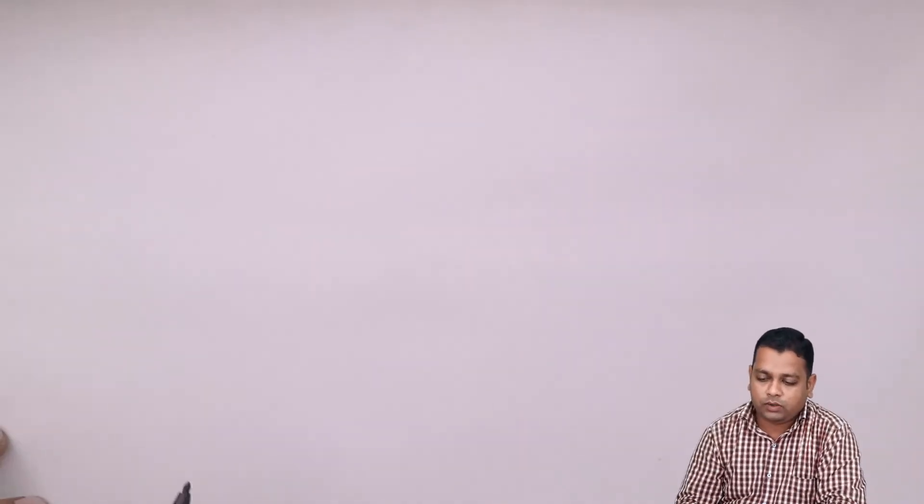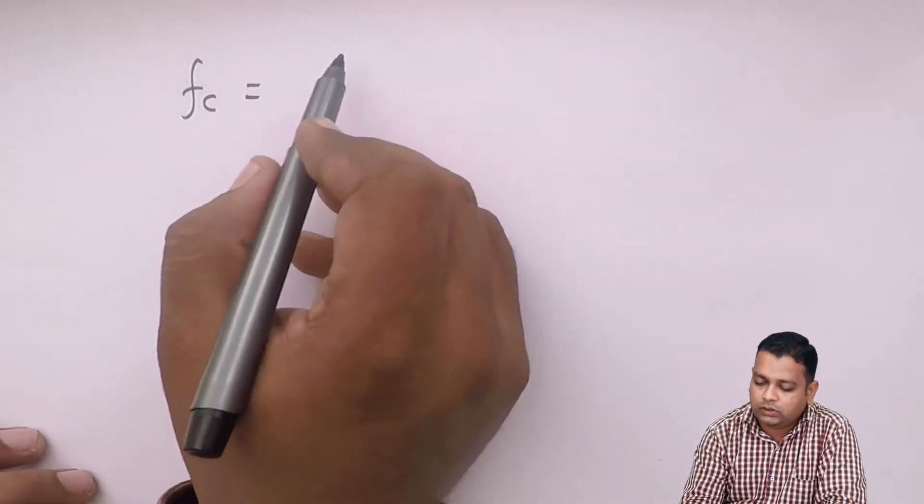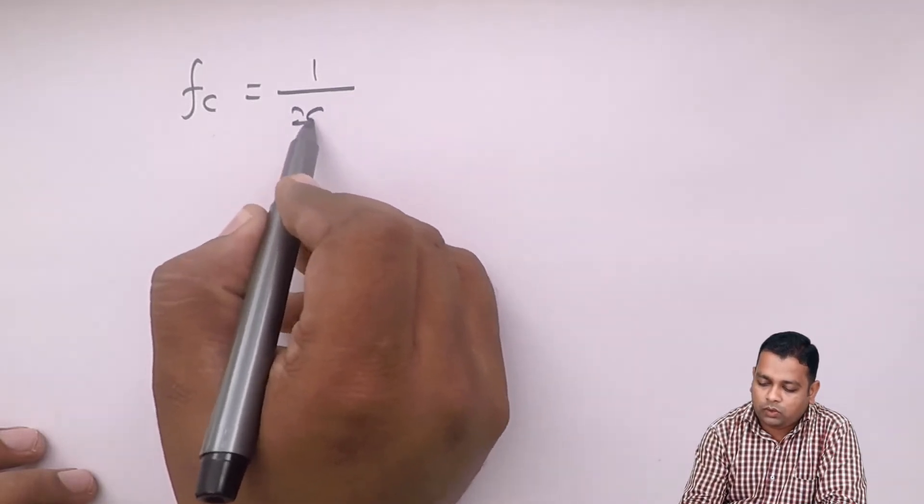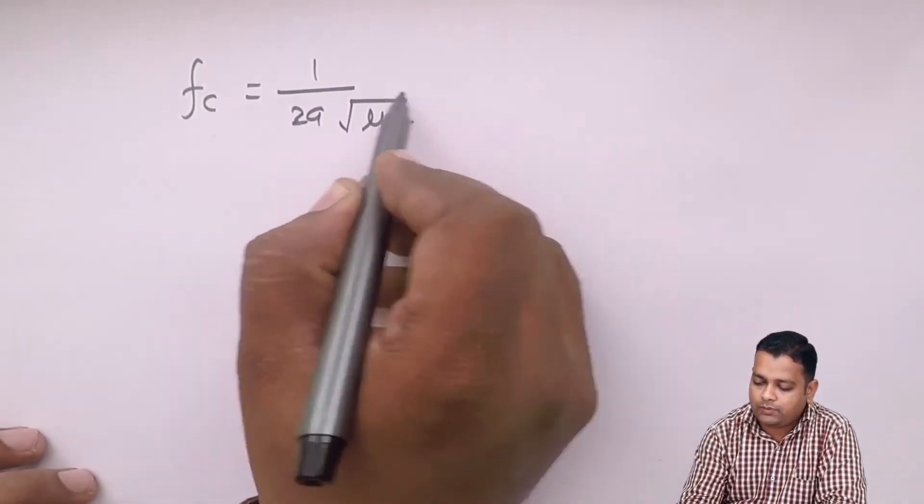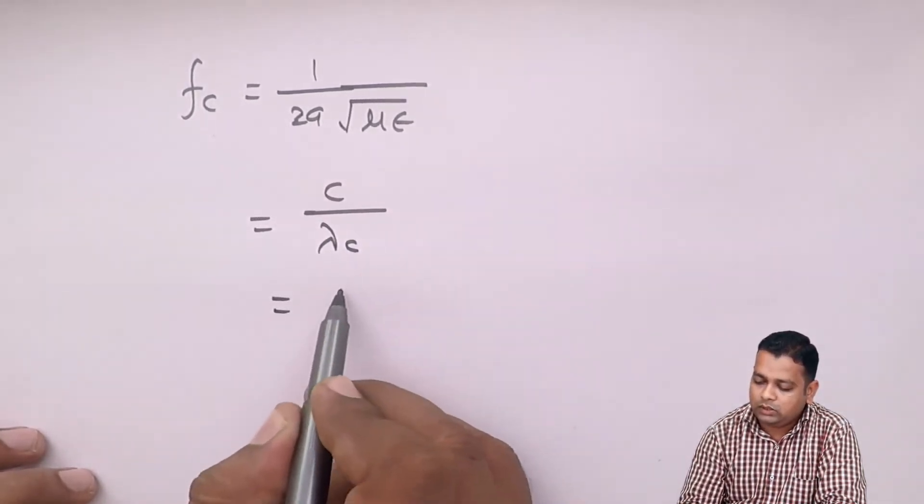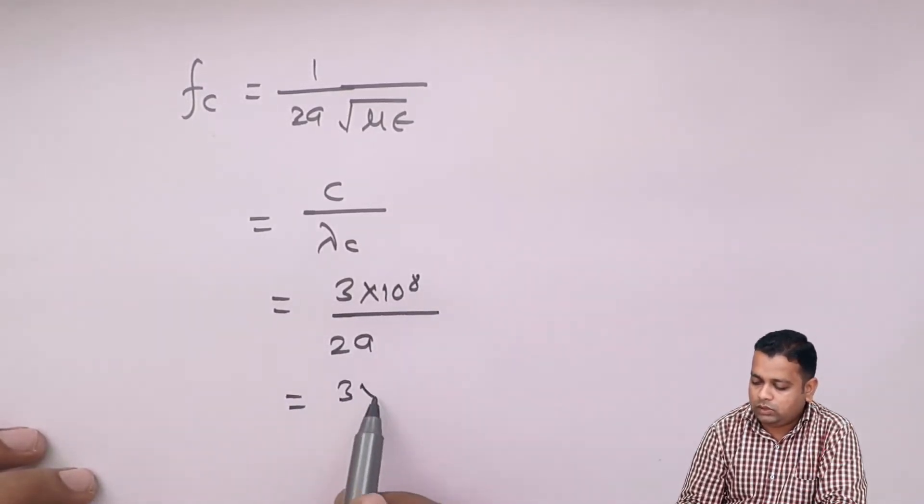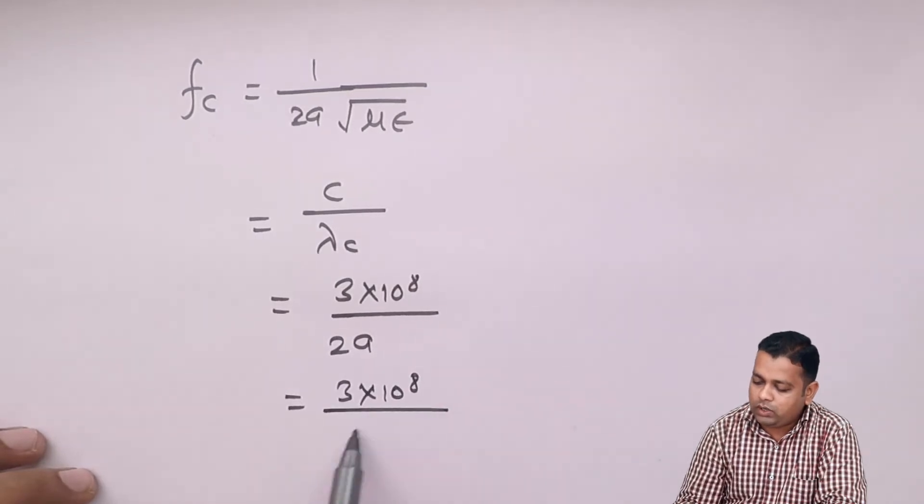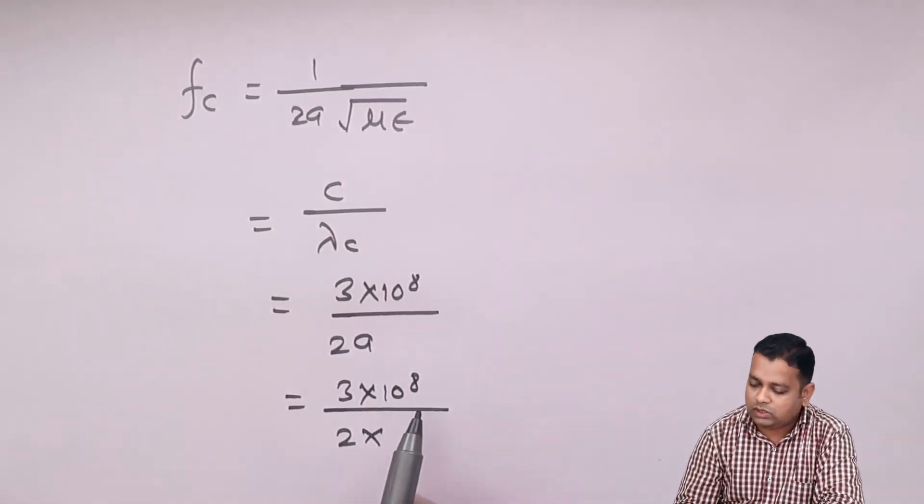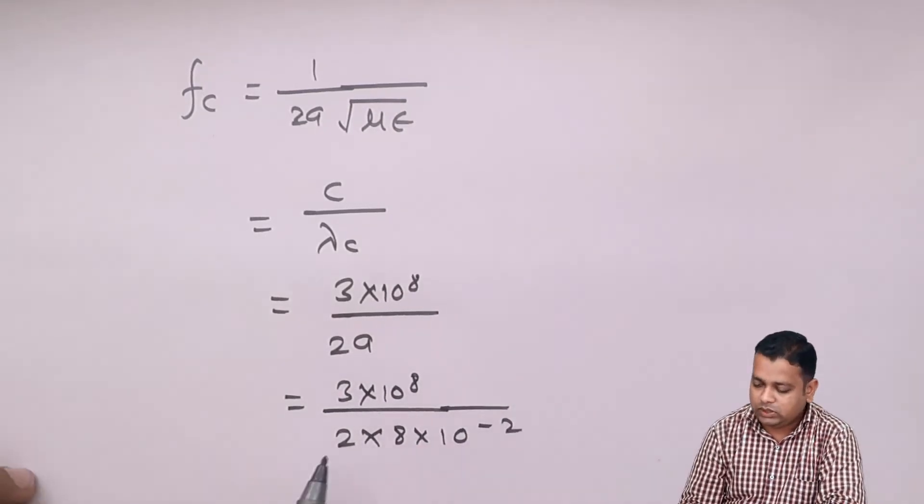For TE10 the dominant mode, the substitution of Fc has to be calculated. Fc is 1 upon twice a under root of mu into epsilon, or we can say Fc equals C upon lambda C, that is 3 into 10 to power 8 divided by twice a. So 3 into 10 to power 8 divided by 2 into 8 into 10 to power minus 2. This results in the cutoff frequency Fc equals 3 into 10 to power 8 divided by 0.16.